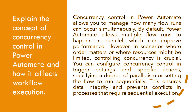Explain the concept of concurrency control in Power Automate and how it affects workflow execution. Concurrency control in Power Automate allows you to manage how many flow runs can occur simultaneously. By default, Power Automate allows multiple flow runs to happen in parallel, which can improve performance. However, in scenarios where order matters or where resources might be limited, controlling concurrency is crucial. You can configure concurrency control in trigger settings and specific actions, specifying a degree of parallelism or setting the flow to run sequentially. This ensures data integrity and prevents conflicts in processes that require sequential execution.